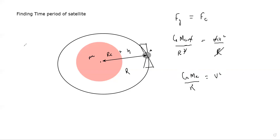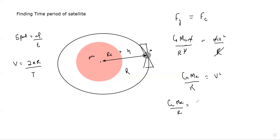Speed is equal to distance over time. When objects move in a circular path, the distance travelled equals the circumference, which is 2πr. And t is the time period, because it refers to one complete revolution. So the speed v equals 2πr divided by t. In place of v, I can substitute 2πr over t.